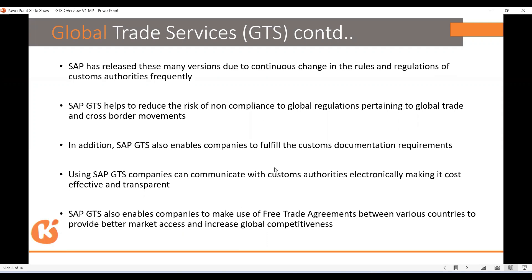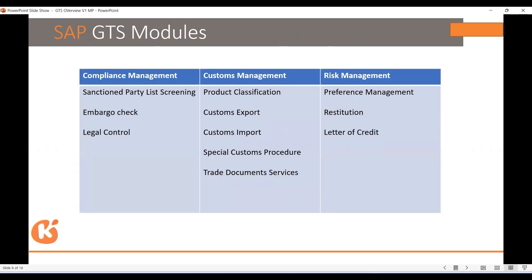This is about reducing delays by communicating directly to customs authorities through electronic means, which reduces waiting time at the border for product clearance. Free trade agreements fall under your risk management. In GTS, there are three modules: compliance, customs, and risk.